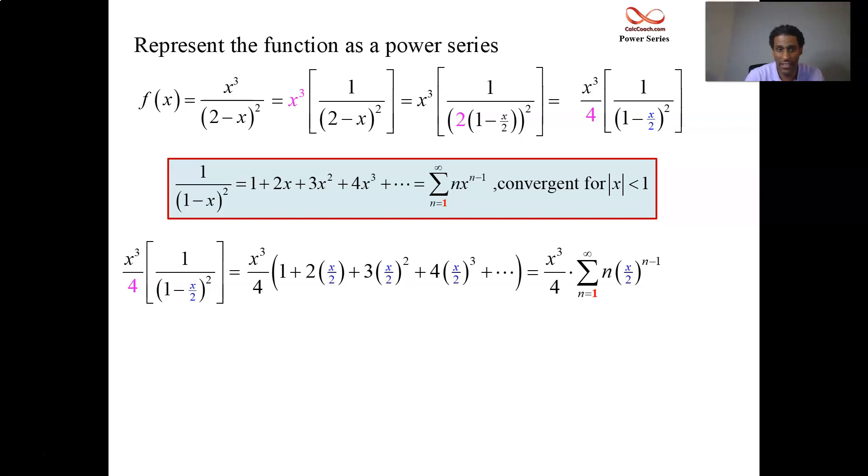We've just got to simplify this and we're done. Let's distribute. Go back to the original function, x cubed over 2 minus x quantity squared. And let's distribute the x cubed over 4. See how those twos cancel in the second term there? And in the fourth term, we're going to have some cancellation as well. So we end up with the four terms, x cubed over 4, x fourth over 4, 3x fifth over 16, x sixth over 8. And it goes on forever. It's all positive.